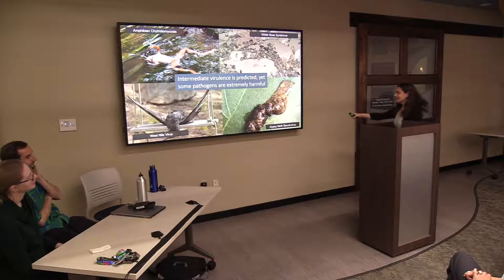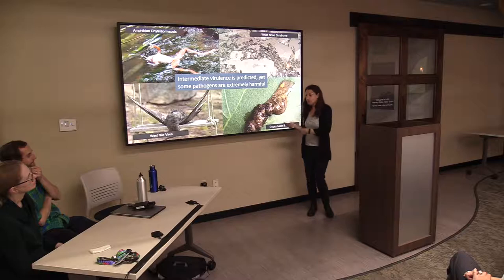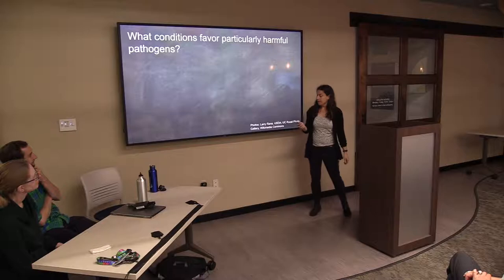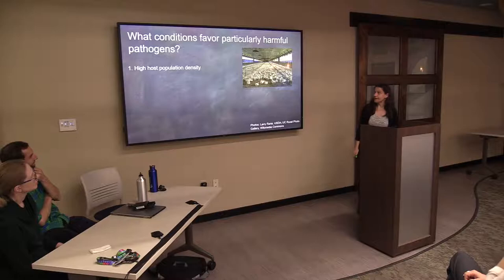And yet we have all these incredibly harmful pathogens. This used to be a caterpillar — that looks like a little on the too-much side of harm. How does this happen? Certain conditions can favor the evolution of harmful pathogens more than others.